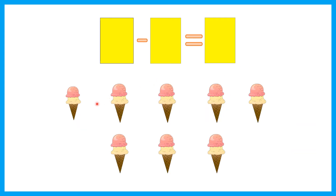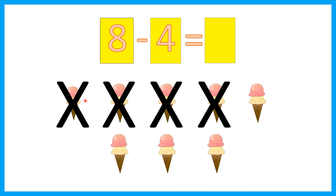How many ice creams are there? Let's count. 1, 2, 3, 4, 5, 6, 7, 8. Eight ice cream. Eight minus four. So let's cross out four ice cream. 1, 2, 3, 4. How many left? Let's count. 1, 2, 3, 4. Four ice cream. That's right.